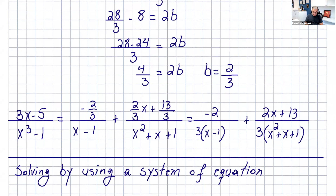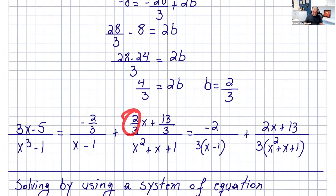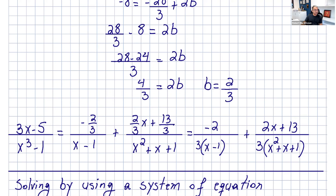So a equals negative 2 over 3, b equals 2 over 3, and c equals 13 over 3. I hope that's a helpful lecture. If you forgot about partial fraction decomposition, please watch this a couple of times. The partial fraction decomposition is used in calculus 2 for integration and when you do Laplace transforms in differential equations. Thank you for watching and I'll see you in my next video.